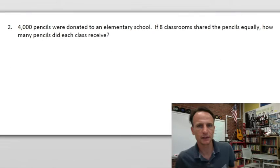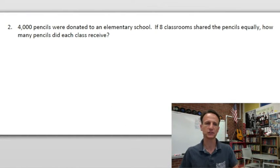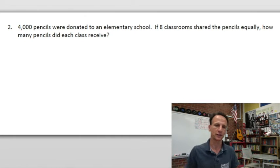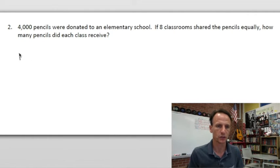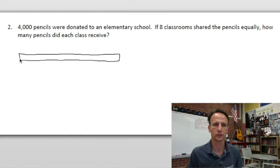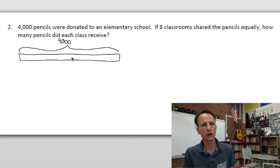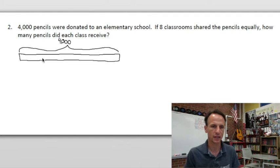Number two: 4,000 pencils were donated to an elementary school. If eight classrooms shared the pencils equally, how many pencils did each class receive? So we have 4,000 pencils — this whole group is 4,000 pencils. We know how many groups we're splitting it into: there are eight. So I draw seven lines inside and end up with eight sections.